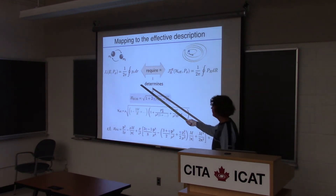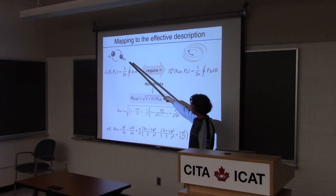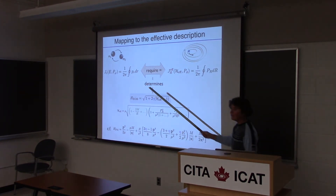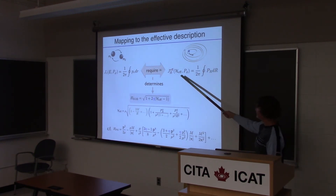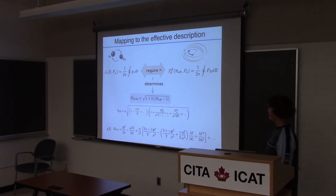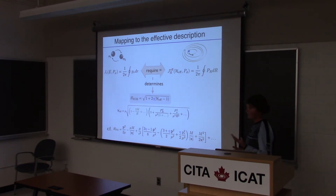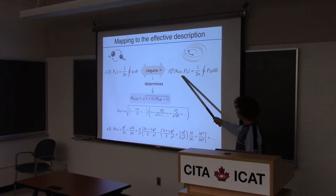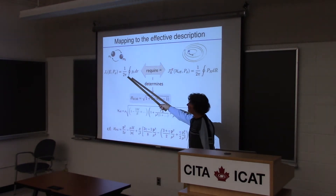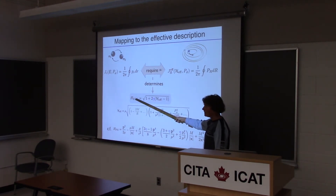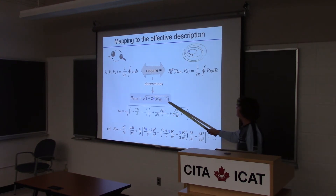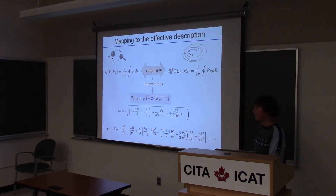In the two-body case, the radial action is a function of the total energy and the azimuthal angular momentum. For this reduced problem, similarly, it depends on the effective energy and the azimuthal angular momentum. When you require that these two actions — the phase space areas in some sense — are equal, you can determine how your effective Hamiltonian is related to the energy of the real system. So in this model, you replace the two-body Hamiltonian with this effective Hamiltonian having a particular structure.